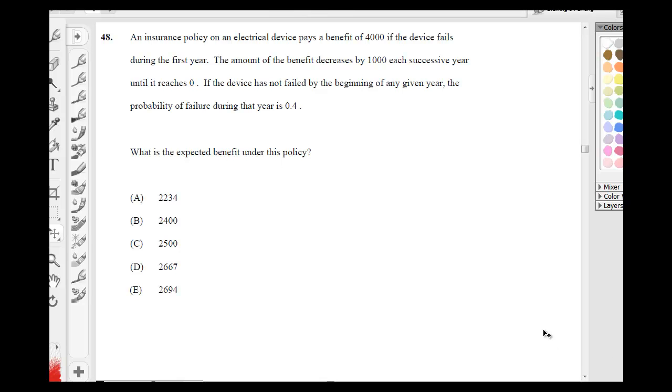This is problem number 48. An insurance policy on an electrical device pays a benefit of $4,000 if the device fails during the first year. The amount of the benefit decreases by $1,000 each successive year until it reaches 0.